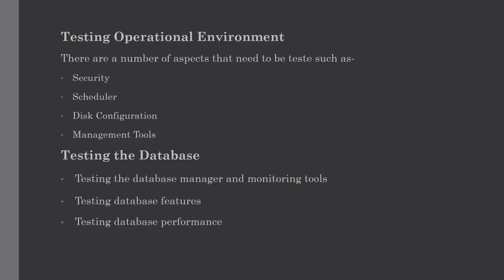Our next topic is testing the operational environment. There are a number of aspects that need to be tested in a data warehouse, such as security, scheduler, disk configuration, and management tools. We will discuss them one by one. First, security: a separate security document is required for security testing, which contains a list of disallowed operations and devised tests for each of them.